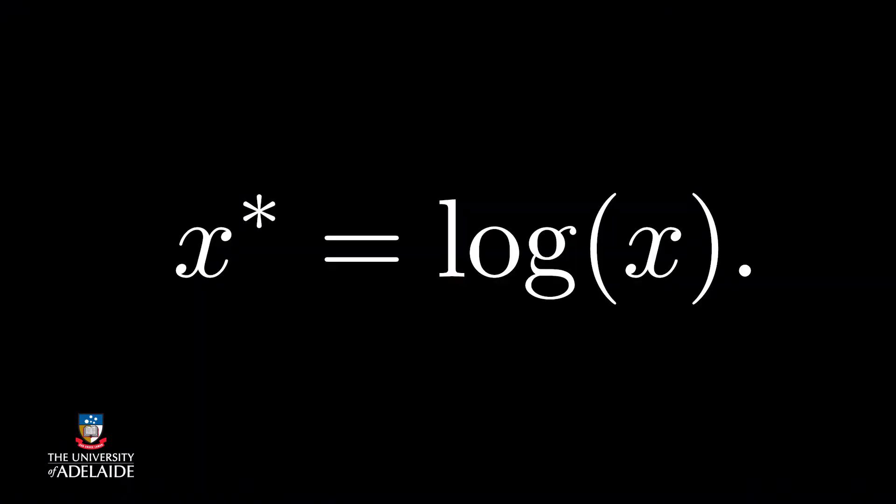But what about the log transform? This is where Box and Cox were so clever. With some calculus, we can show that as lambda approaches 0, we get x star equals log x. So we have a general form that gives most of the transformations that you might want.